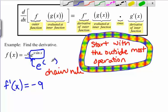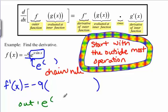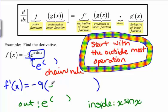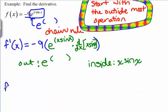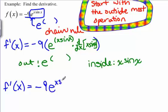So how do you take the chain rule of e to the x sine x? The outside function is e to the something, and the inside is x sine x. After our negative 9, we're going to write the derivative of e to the something, which is e to that something — so e to the x sine x, since that's our inside function — and we need to follow that with the derivative of x sine x. We have f prime of x is negative 9, e to the x sine x, followed by the derivative of x sine x.